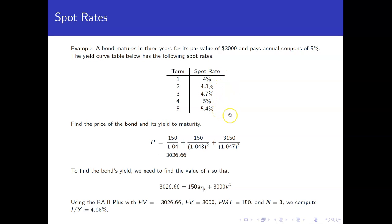And we're going to use these spot rates to price a $3,000 par value bond, which is redeemable at par, and pays 5% annual coupons.